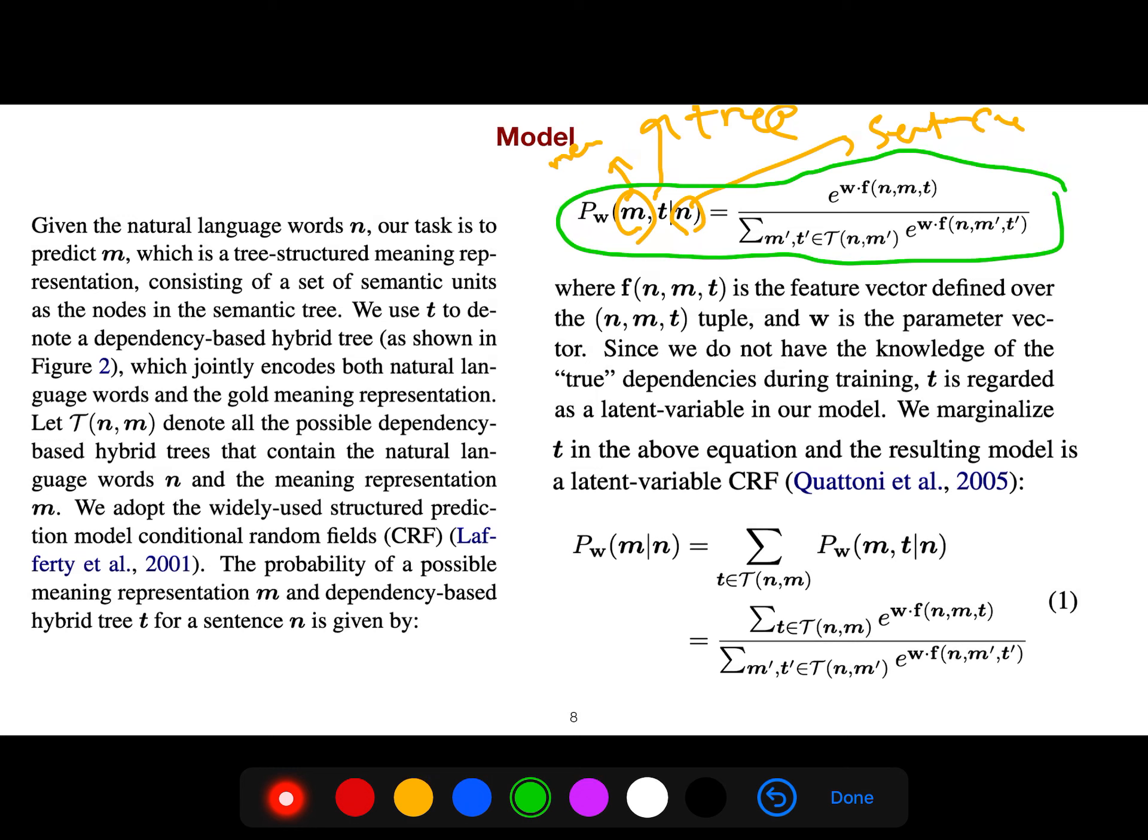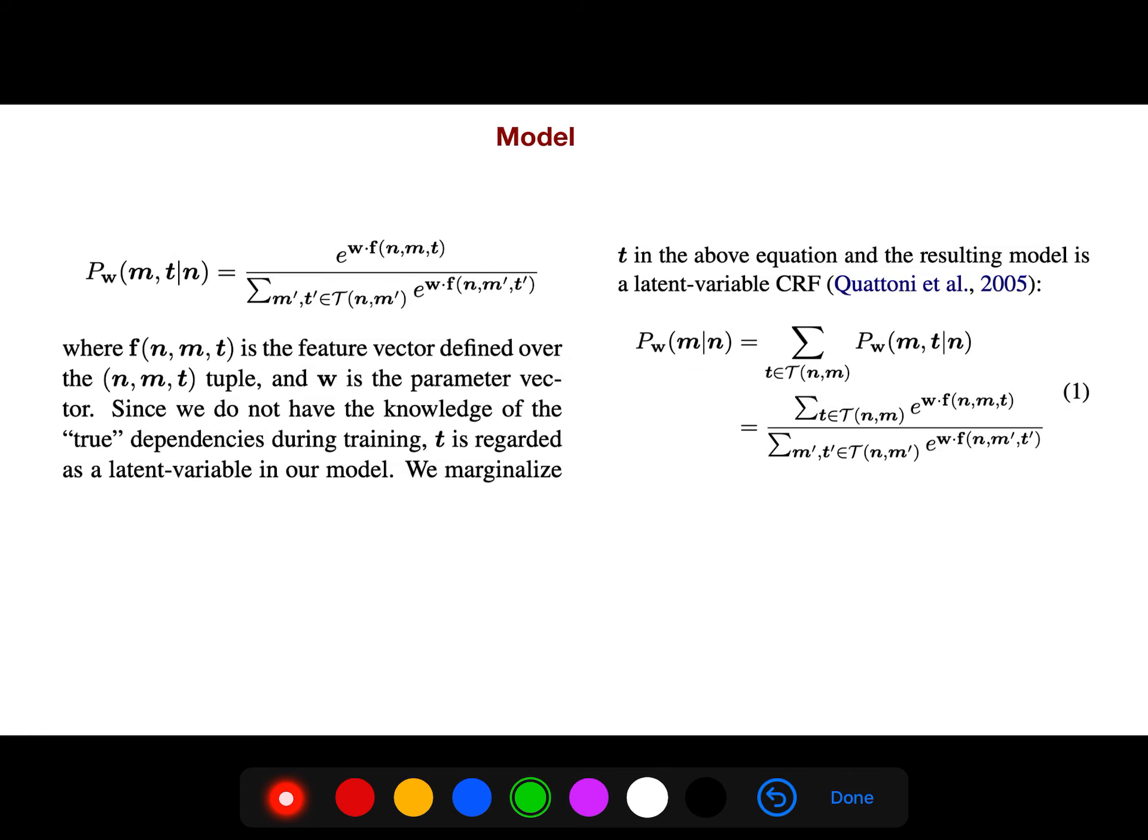You see that this log-linear model, where w is a parameter vector, we want to identify. We marginalize, of course, over all trees because it's not just one tree—for our sentence there are several trees. And now the resulting model is a latent variable conditional random field.